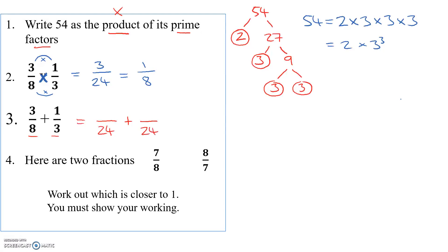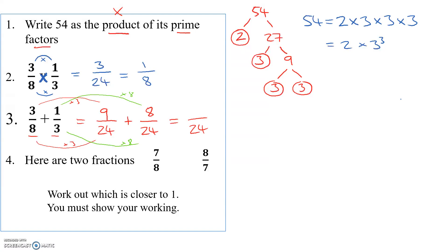Here twenty-four is the lowest common multiple. We're going to change three eighths into twenty-fourths. What did I do to the eight to get to twenty-four? Multiplied by three. What do we do to the three? Multiply by three. Three times three is nine, so three eighths is the same as nine twenty-fourths. For one third: what did I do to the three to get to twenty-four? Multiplied by eight. So one times eight is eight — that gives us eight twenty-fourths. So three eighths becomes nine twenty-fourths, one third becomes eight twenty-fourths. Now we've got the same denominator, so we just add the numerators. Nine twenty-fourths plus eight twenty-fourths gives us seventeen twenty-fourths, and we can't simplify this one. So we're done: seventeen twenty-fourths.